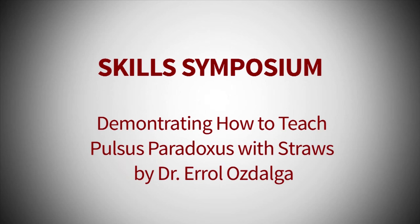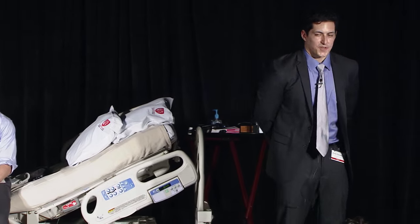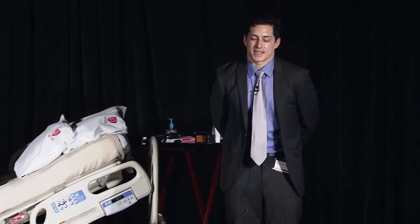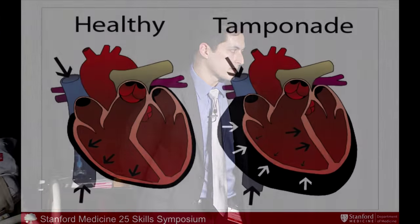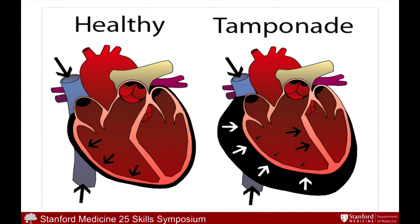Another session we do is on pulsus paradoxus. It's one of those exam findings or exam techniques that's really great and really helpful at the bedside, and we make sure that every resident knows how to do it. When someone has cardiac tamponade, searching for pulsus paradoxus can be very sensitive and specific for making a diagnosis of cardiac tamponade.